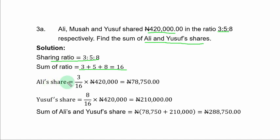For Ali's share, you have Ali's ratio, that is 3 over sum of ratio 16, times total amount of money shared. And Ali's share is 78,750 Naira. Yusuf's share is equal to Yusuf ratio, that is 8 over sum of ratio 16, times total amount of money shared, and that gives 210,000 Naira. So sum of Ali's and Yusuf share is 288,750 Naira.